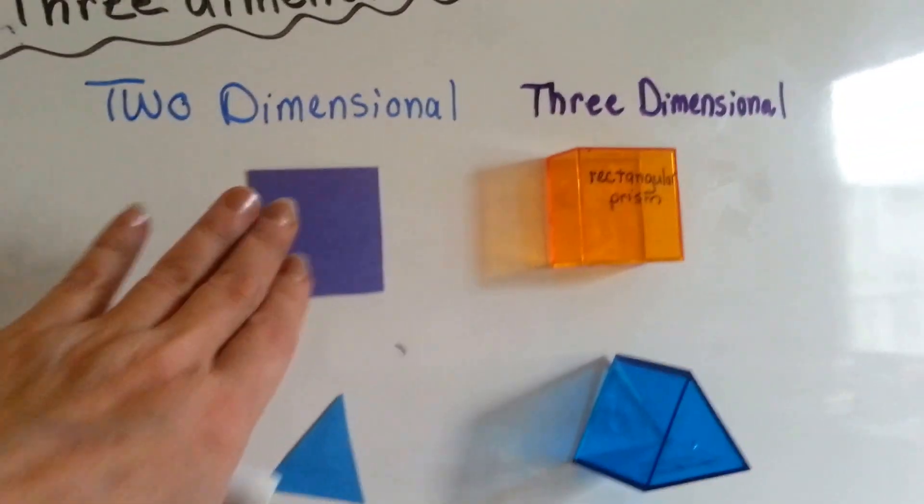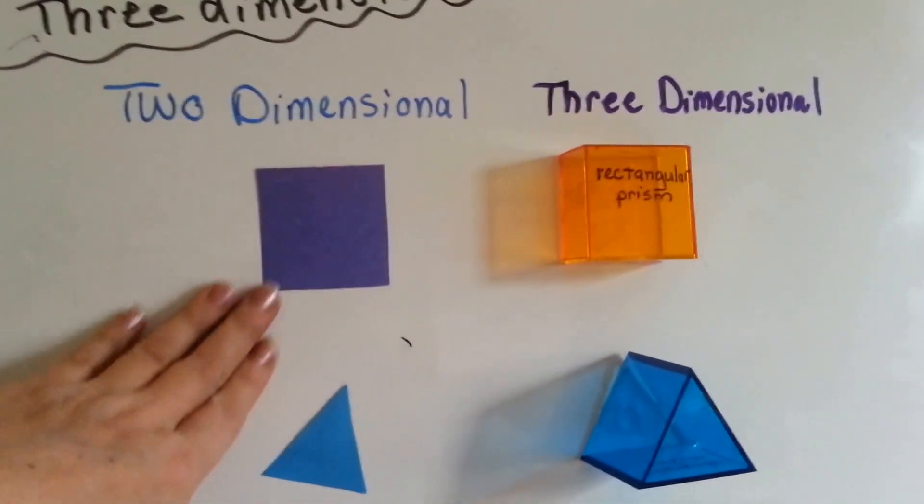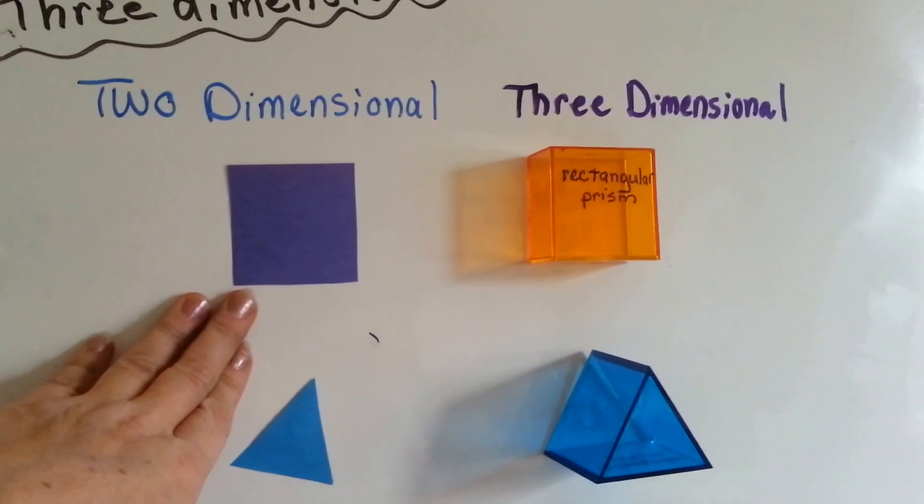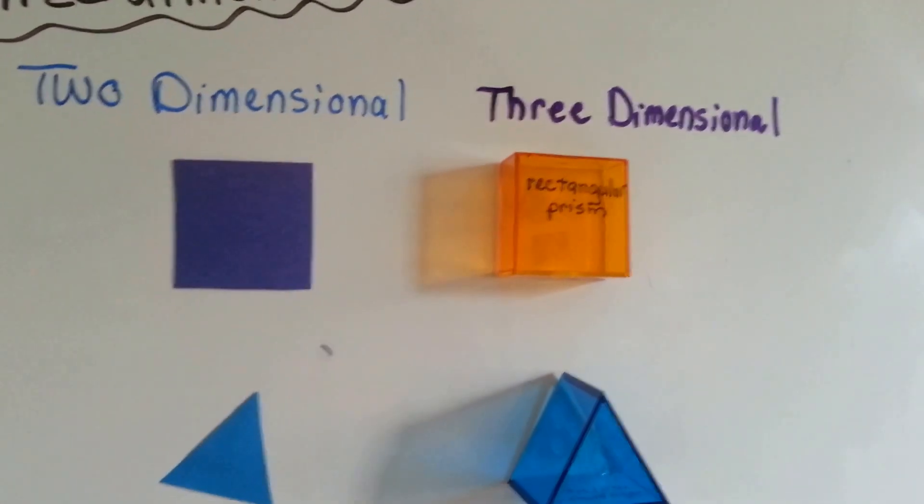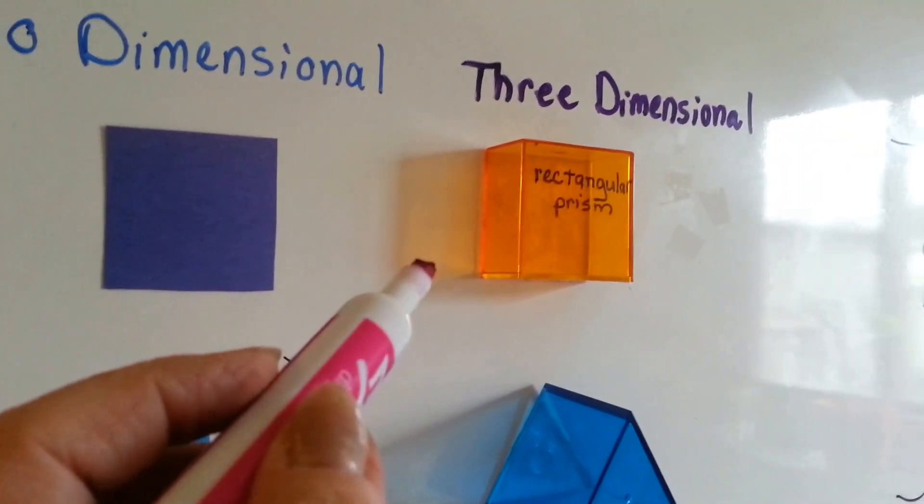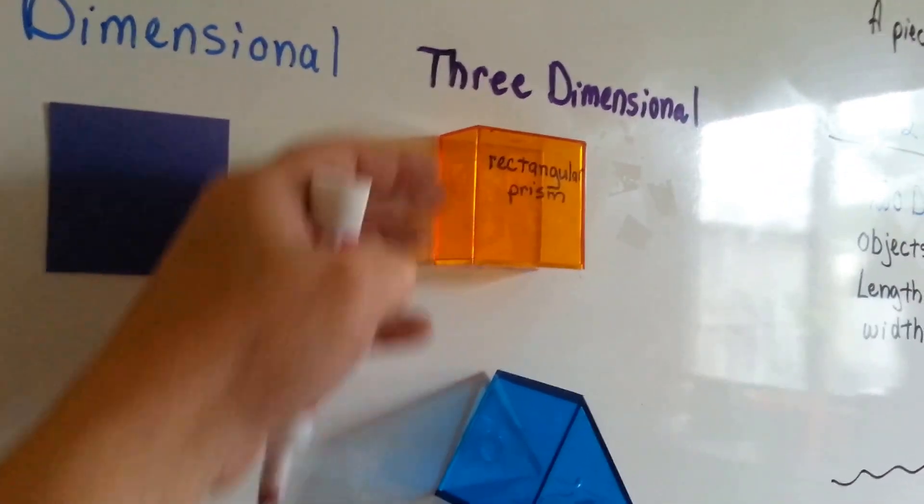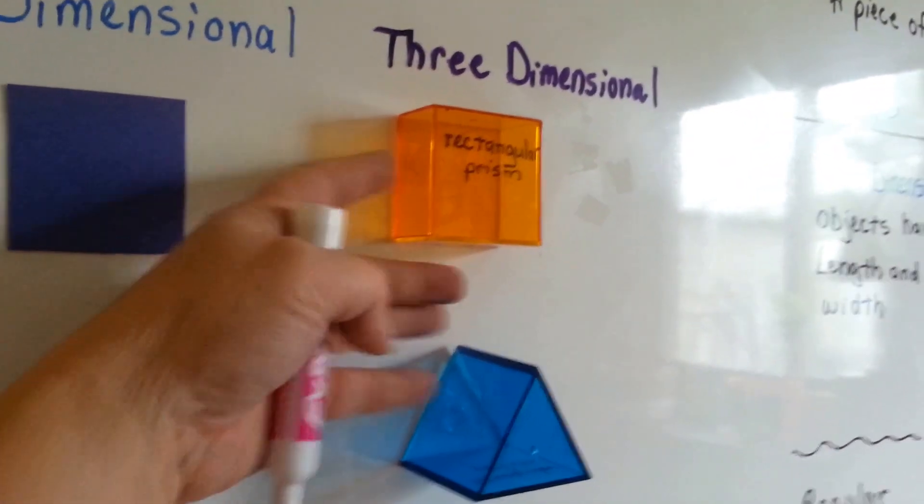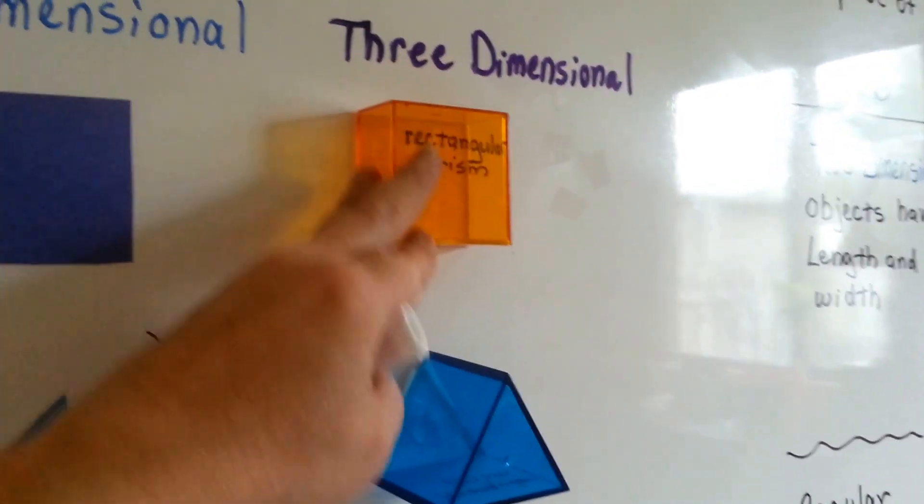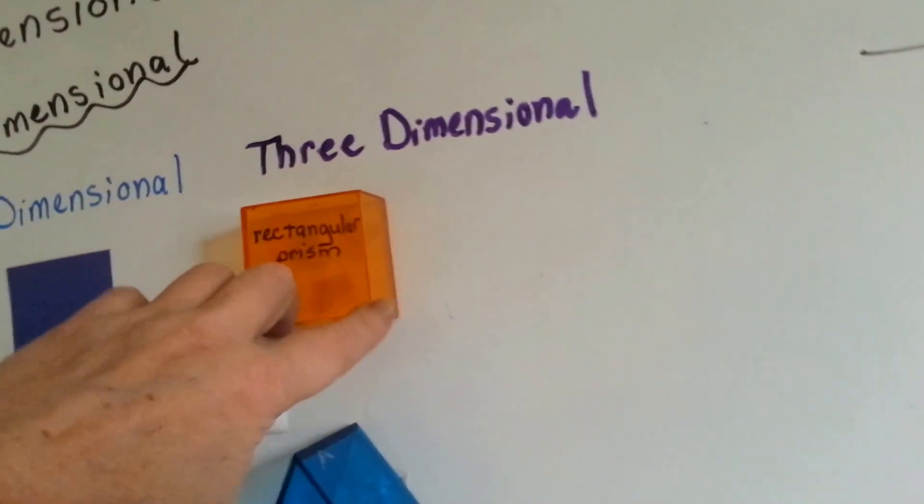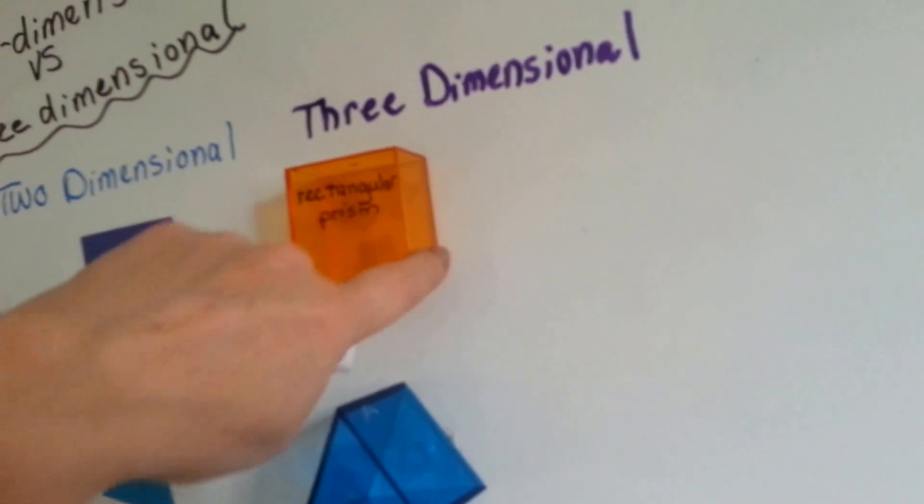So, this is a two-dimensional square that's flat. See how I can just rub it like this? But this is a three-dimensional prism. See how it comes out from the board? I can't rub it flat because I would knock it over. It's sticking out from the board. It's got another dimension to it.